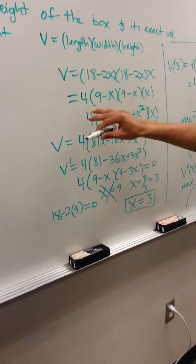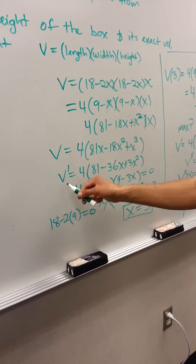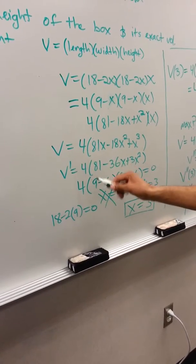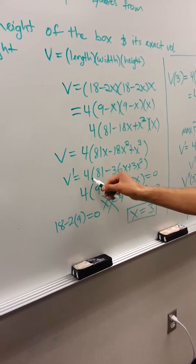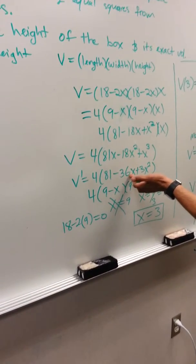That's after simplifying everything down. I have not taken the derivative yet, so here is where I take the first derivative. The 4 remains on the outside, and we're left with 81 - 36x + 3x².